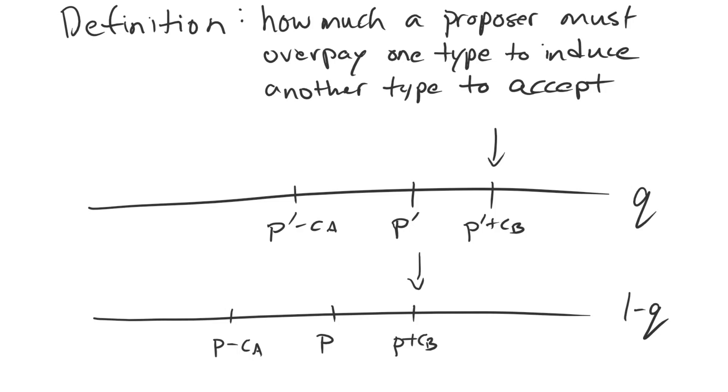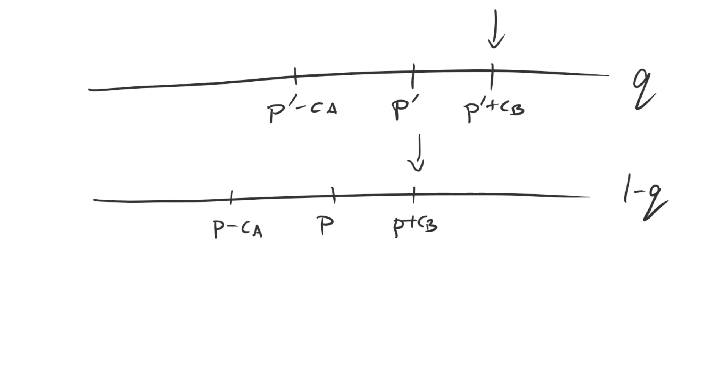So what peace premiums are going to do for us is measure how much A is willing to incur risk. Let's think about what's going on here in terms of B's reservation value. In the first case, B's war payoff is 1 minus P prime minus CB. That's this quantity right here. That's how much B needs to receive in order to be happy with the settlement and not prefer to fight.